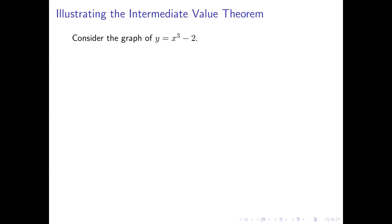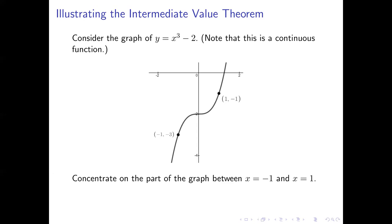Here's a little illustration. Let's take a look at the graph of this polynomial function, x³ - 2. Notice, by the way, that since this is a polynomial, it's guaranteed to be continuous. There's its graph. You can see the point (-1, -3) is on the graph, and (1, -1) is on the graph.